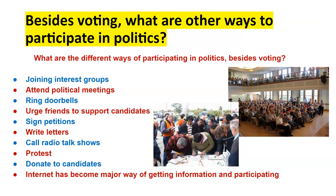Beyond voting, we can join interest groups, go to political rallies, or join protests. We can ring doorbells and knock on doors. We can tell friends and use social media to support candidates. We can sign petitions, start petitions, write letters, and call our elected officials to tell them about issues that are important to us — things we want to carry out.